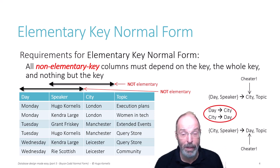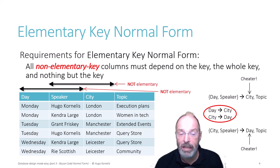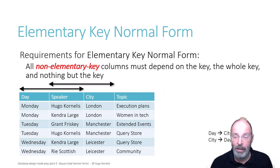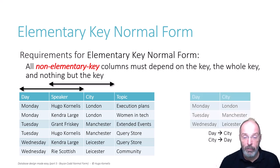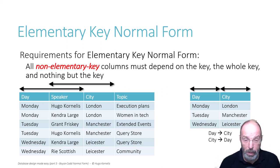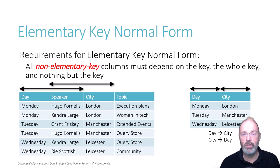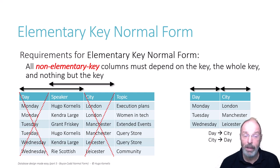Day and city do not depend on the key, the whole key, and nothing but the key, because day and city have a one-to-one relationship. So for those two functional dependencies, as always when we find a violation of a normal form, we are going to create a new table for those columns. Given the functional dependencies, there are obviously two candidate keys on this table. When we create such a new table, we know that the key column must remain in the original table, but the non-key columns can be removed. However, there are two keys in this case, so we have a choice.